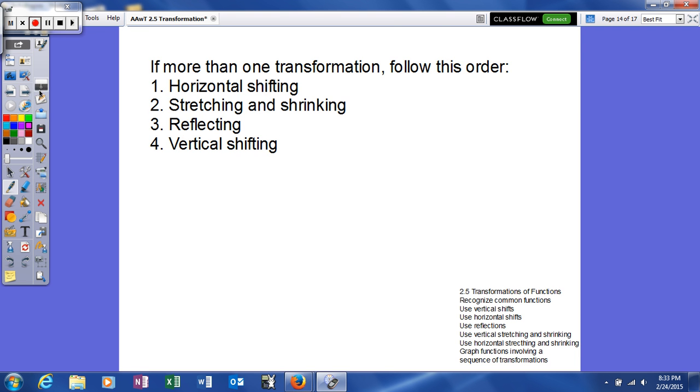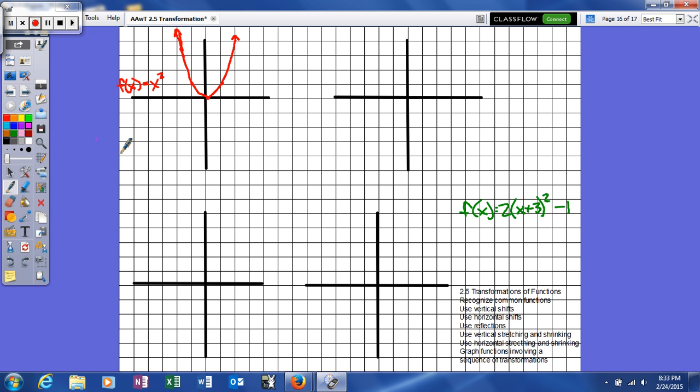So the first thing we're going to do is horizontal shifting. Horizontal shifting is our c value, which in this case is this right here. So it's x plus 3, so we're going to actually shift it left 3. So we're going to take each of those points and move them left 3. When we do, our graph is going to look a little something like this. Okay, so that's our horizontal shifting. Hopefully I moved everything left 3.